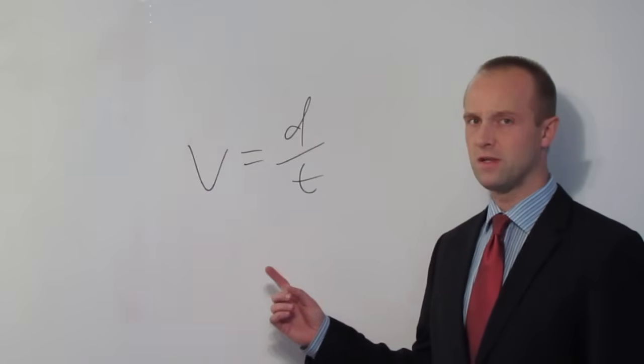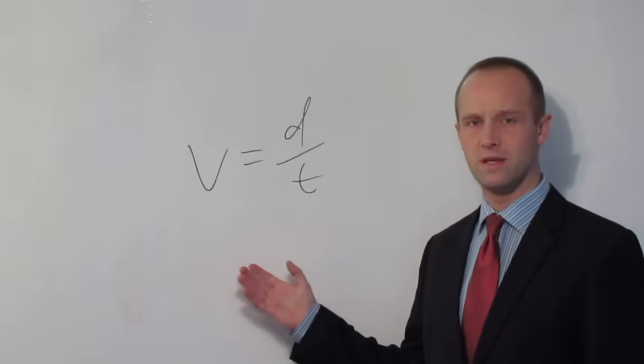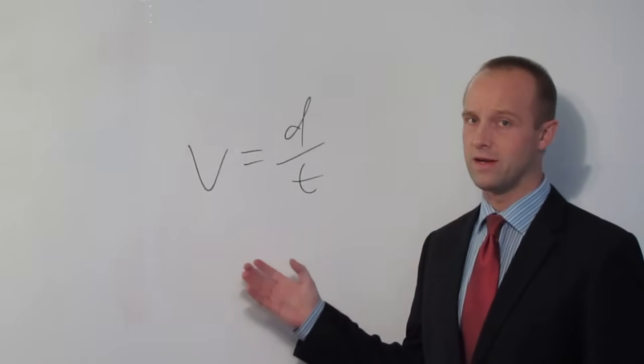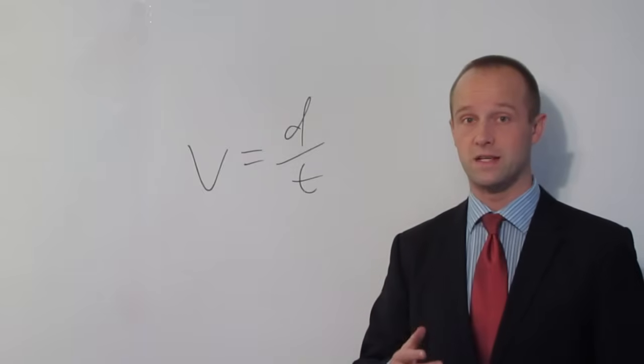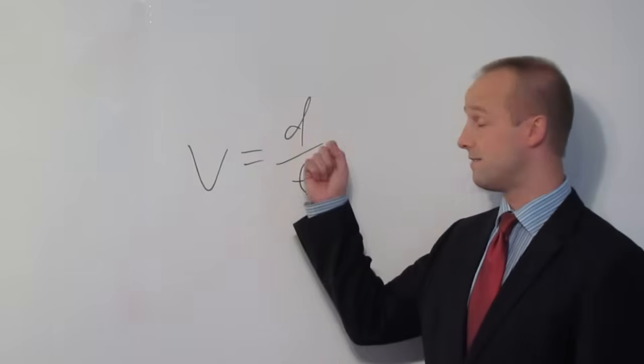Now the equation for velocity is almost identical to the equation for speed. You work it out in exactly the same way: distance divided by time. Again, you'll get given a distance, you'll get given a time, and you divide one by the other.